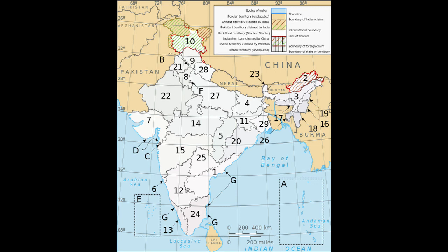India is the world's most populous democracy — a parliamentary republic with a multi-party system. It has seven recognized national parties, including the Indian National Congress and the Bharatiya Janata Party, and more than 40 regional parties. The Congress is considered centre-left in Indian political culture and the BJP right-wing. For most of the period between 1950 and the late 1980s, the Congress held a majority in parliament. Since then, it has increasingly shared the political stage with the BJP, as well as with regional parties which have often forced the creation of multi-party coalition governments.